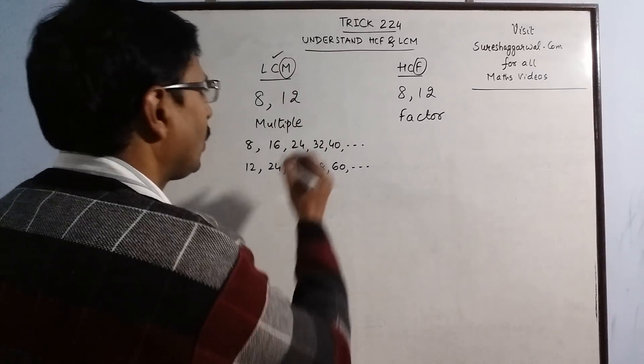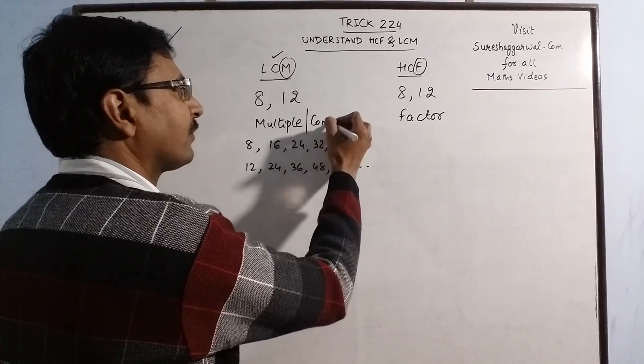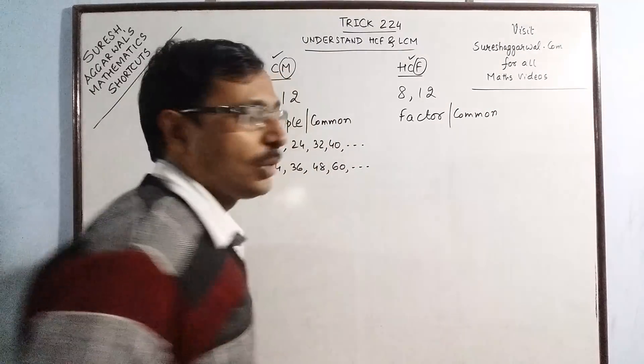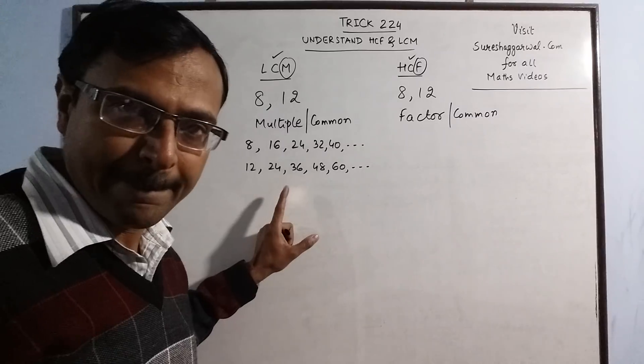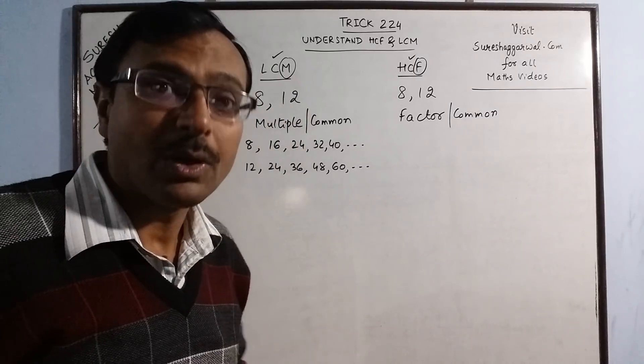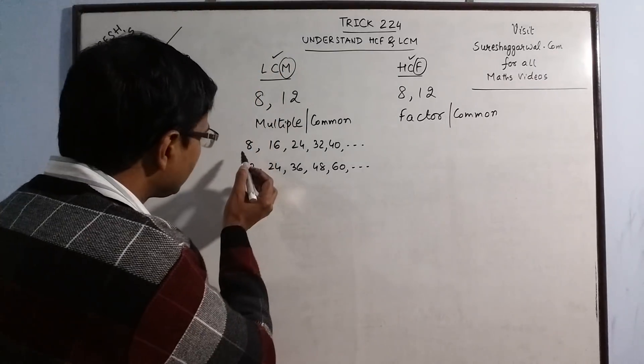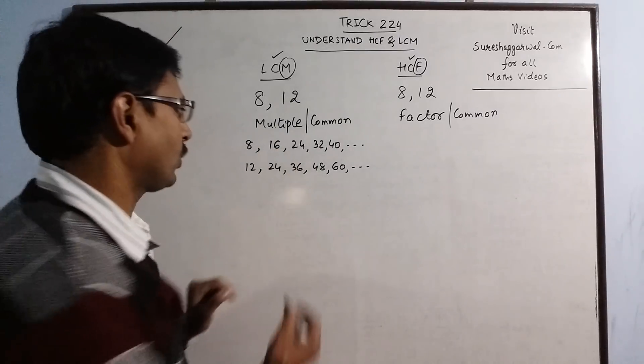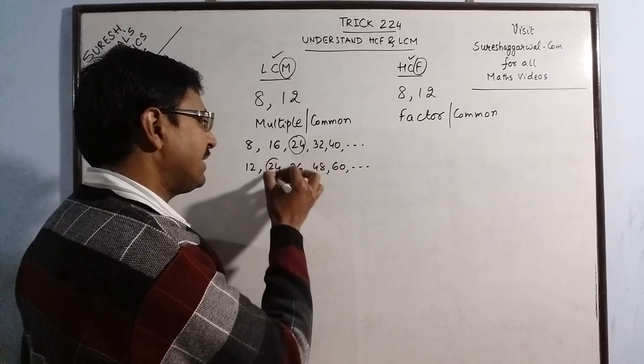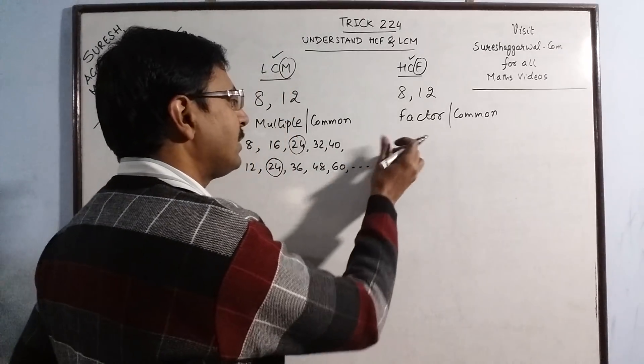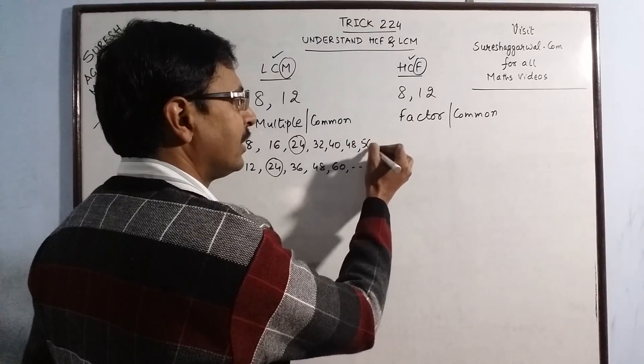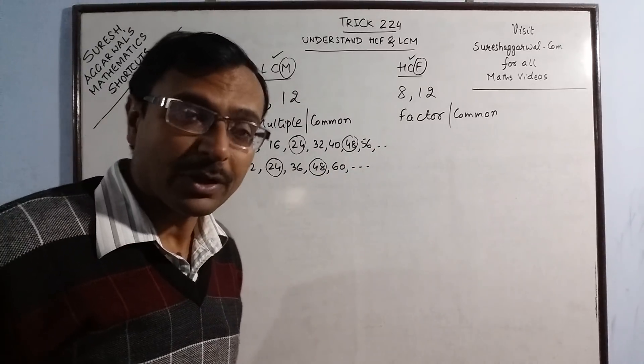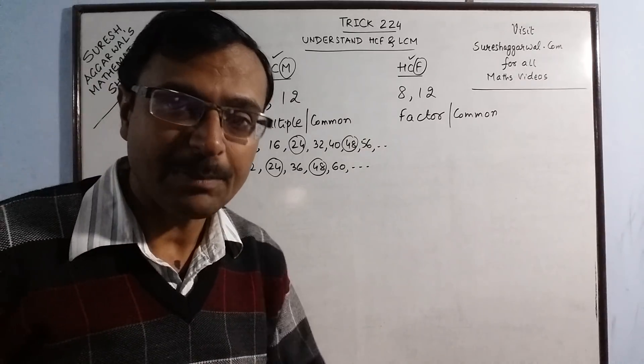Now C stands for common. Here also C stands for common. So we are talking of multiples, and what type of multiples? Common multiples. Now see what is common: 8 does not exist here, 16 does not come here. 24, now see 24 is a common multiple. Likewise if you write this table further you get another common multiple say 48. So we are talking of common multiples.